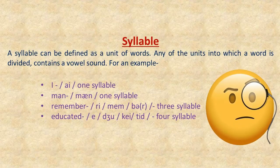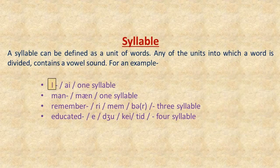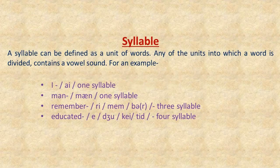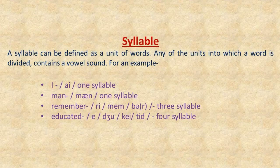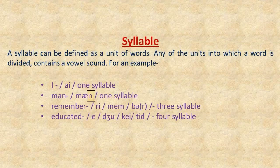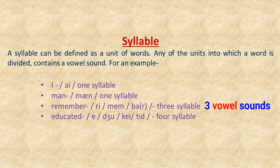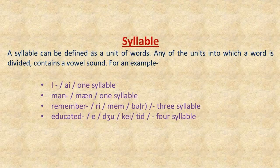Let's look at some examples. The word 'I' has one syllable but there is no consonant — it is a diphthong sound. The word 'man' also has one syllable but it has consonants as well, with a vowel sound in between. The word 'remember' has three vowel sounds and the word is divided into three units — it is made of three syllables.